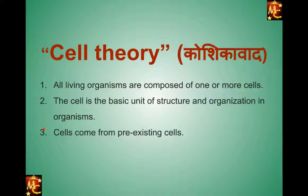The third point of cell theory: cells come from pre-existing cells. This is very important — cells can reproduce the same cells, meaning cells never originate from non-living things. They always come from existing cells. This third part of the theory is very, very important.